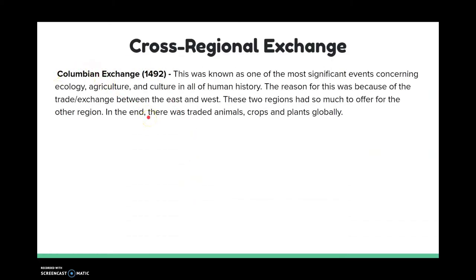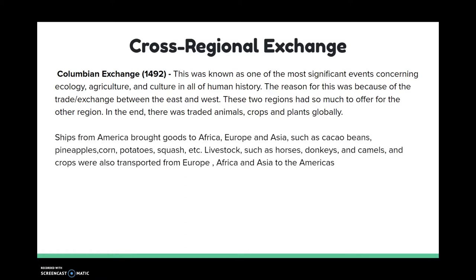The Columbian exchange also counts as a cross-regional exchange. Europe went to the Americas and then brought back stuff from the Americas. They were able to bring industrial tools and all that to build up a civilization in America. The Americas didn't have all these industrial tools, and Europe didn't have all the different resources from the Americas. This regional exchange really brought these two worlds together.